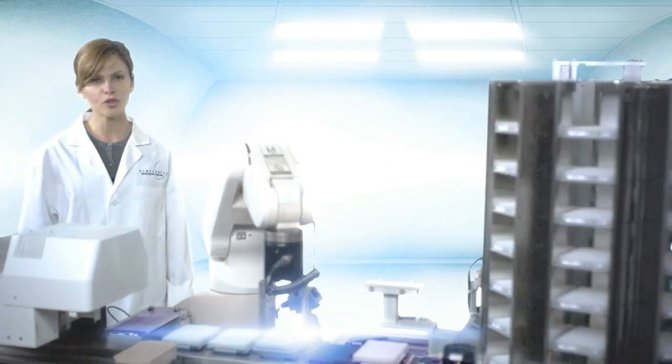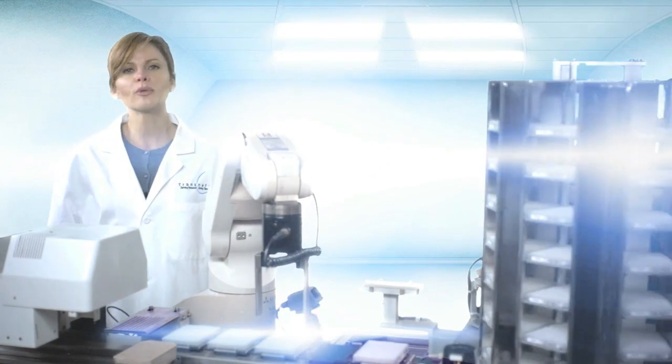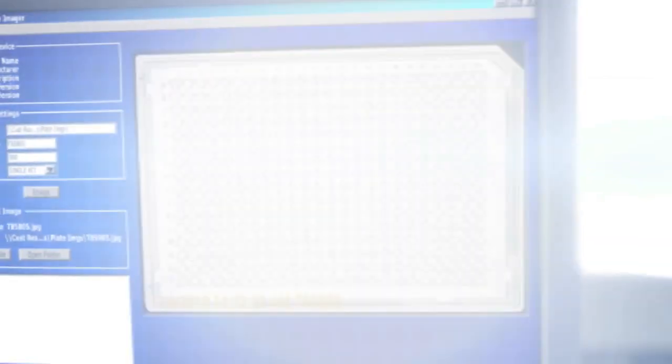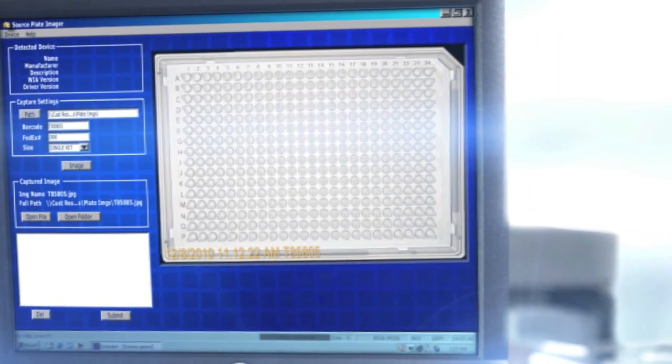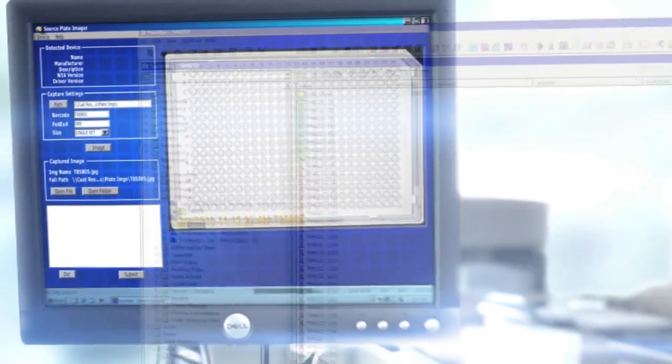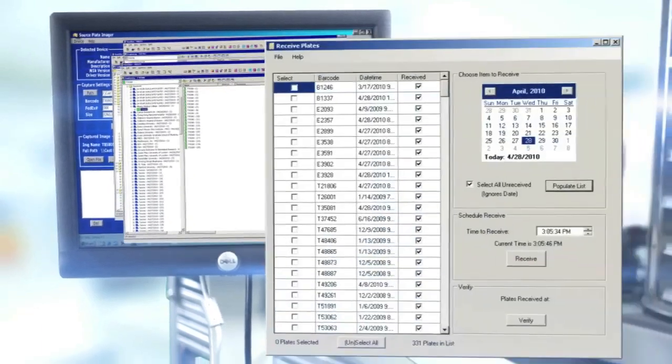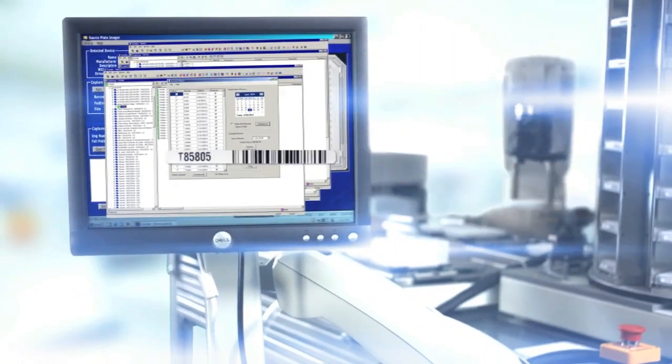Once your sample arrives at the Transnetics facility, the process begins. Your well plate barcode is scanned into the system, which creates a worklist for the robotic, fully automated genotyping service. Our customized LIMS system tracks every sample with redundancy throughout the process using barcodes and a complete chain of custody.